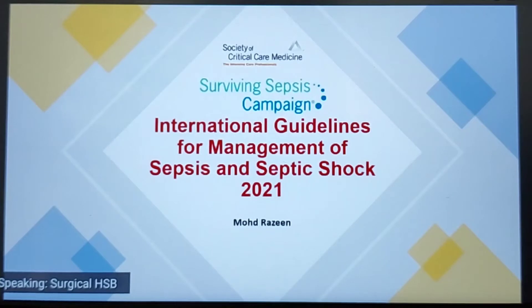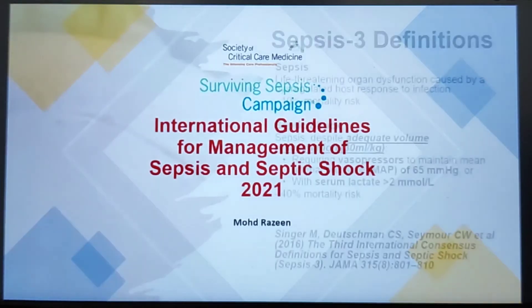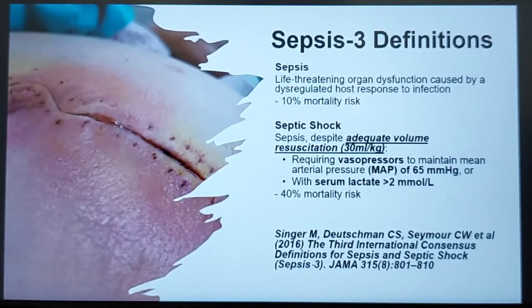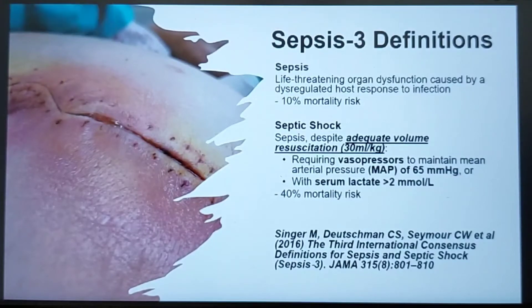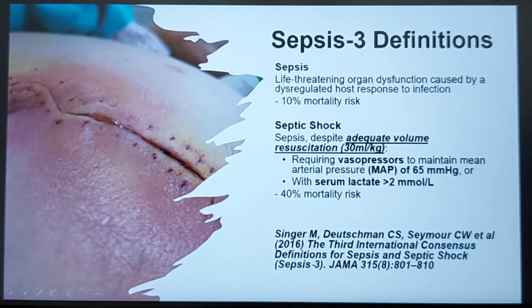This guideline supersedes the previous guideline released in 2016. The definitions still remain the same: Sepsis is defined as life-threatening organ dysfunction caused by a dysregulated host response to infection. Septic shock is Sepsis despite volume resuscitation, requiring vasopressors to maintain MAP of 65, or serum lactate persistently more than 2 despite resuscitation. Diagnosing these conditions confers different mortality risk, which is why we need to diagnose them early and resuscitate adequately.